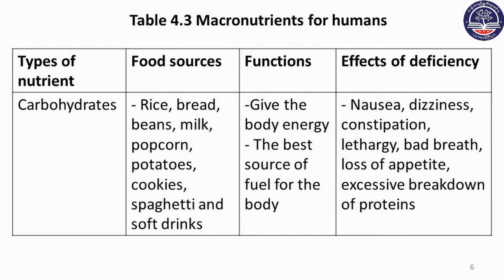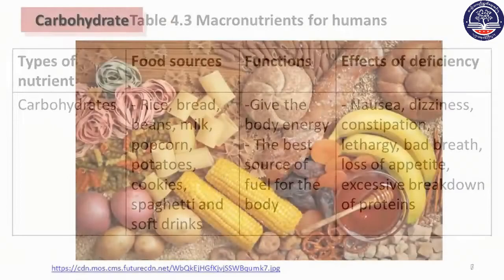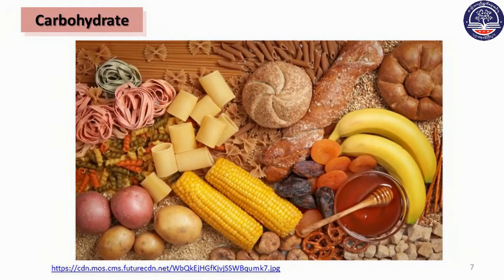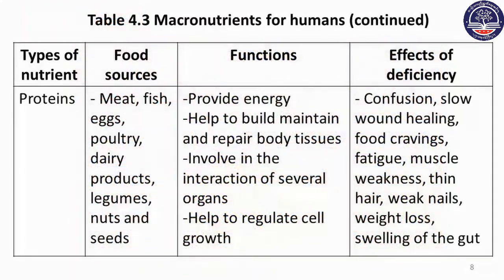Protein sources include fish products, meat, chicken, eggs, dairy products, legumes, nuts, and seeds. Protein helps cells in the body to function properly.